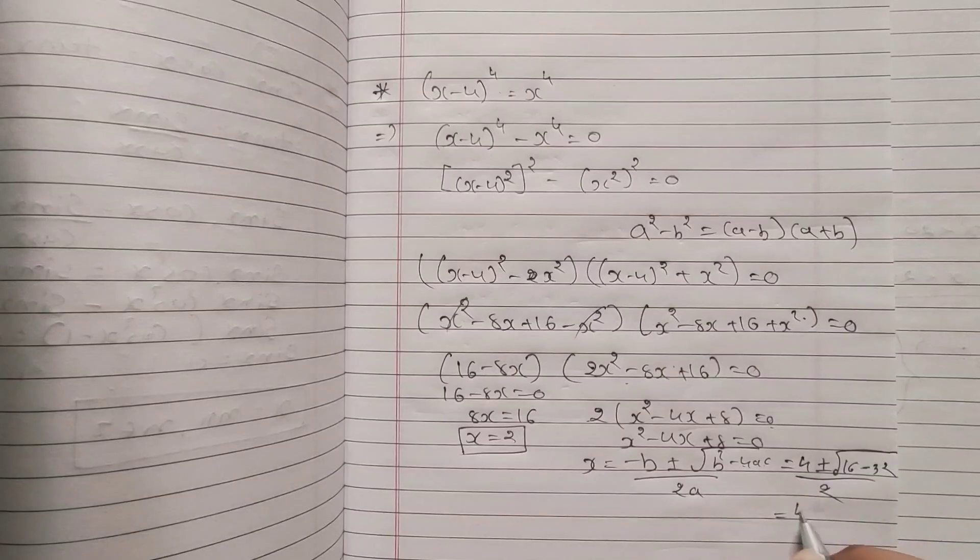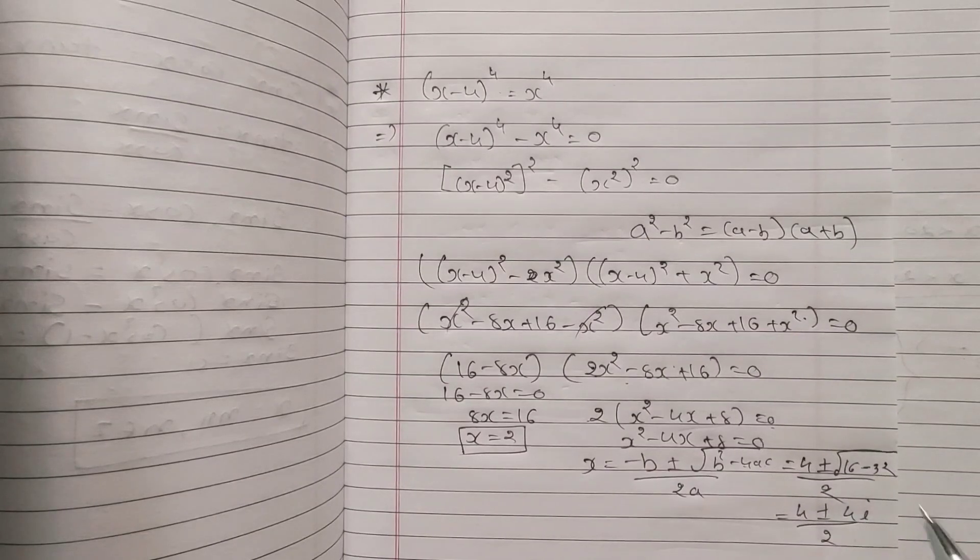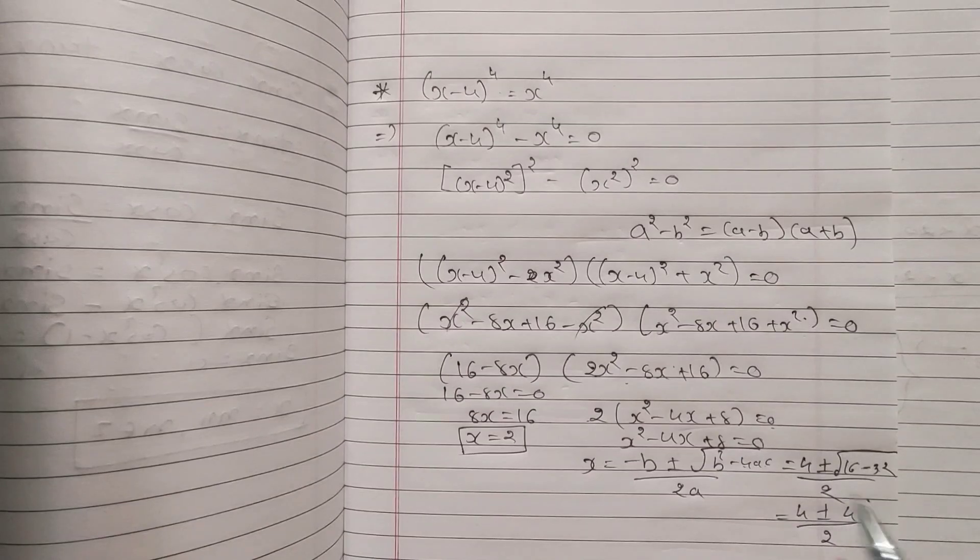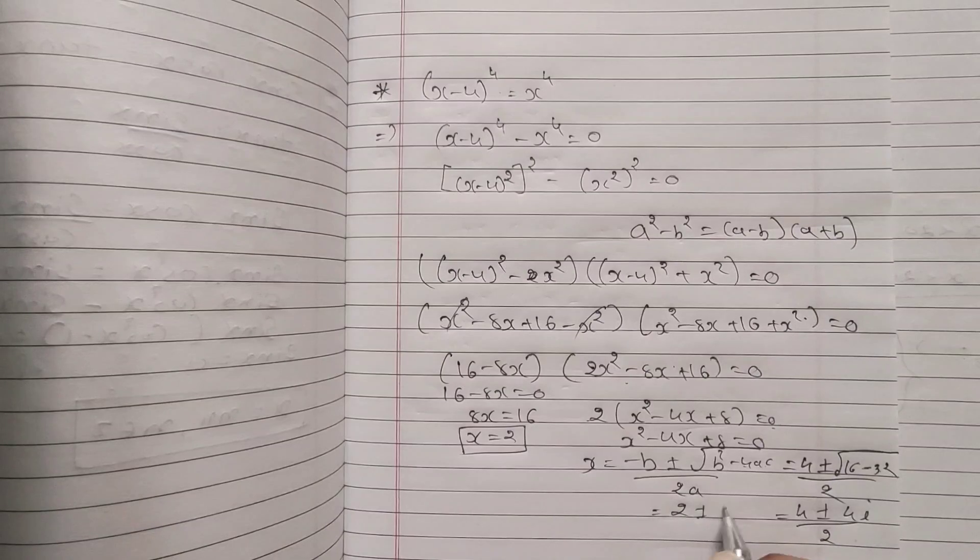So it will become (4 ± 4i) / 2. Because 16 - 32 = -16, and √(-16) = 4i. So our final answer will be 2 ± 2i.